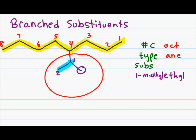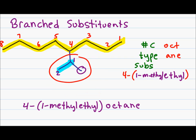Since this branched substituent comes off of carbon four, I put parentheses around it with the number four preceding. The final name for this molecule is 4-(1-methylethyl)octane. Remember that the branched substituent goes in parentheses to show it is all a branch coming off carbon four and not part of the parent chain directly.